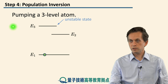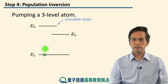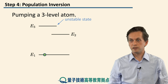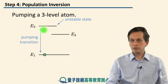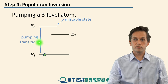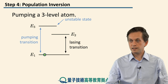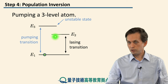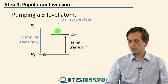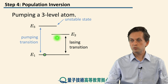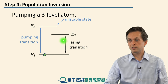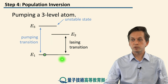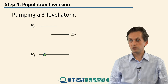This newly introduced level E3 is an unstable level, meaning that whenever we excite the atom to energy E3, it quickly decays and doesn't spend much time in this highest level. The transition between E3 and E1 will be referred to as the pumping transition, and the transition between E2 and E1 is our original lasing transition. The goal is to create population inversion by exciting the atom to E2 without causing stimulated absorption between E1 and E2.